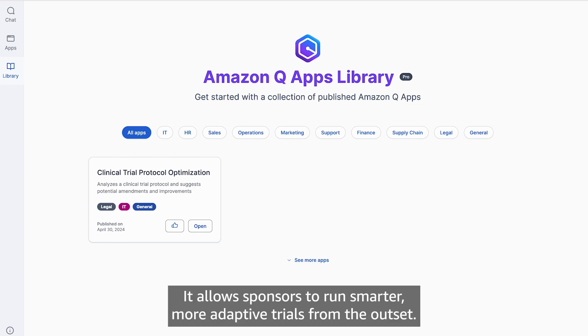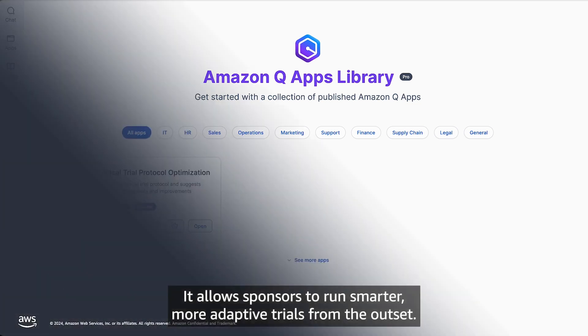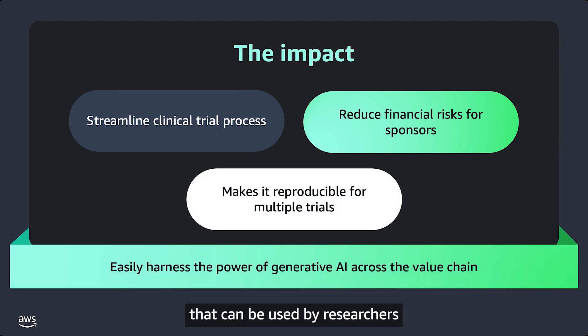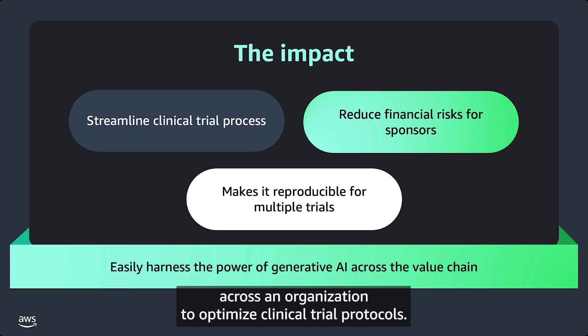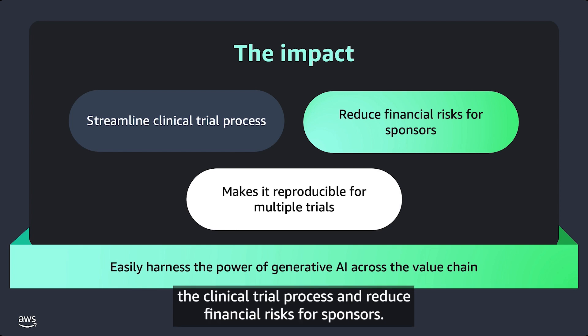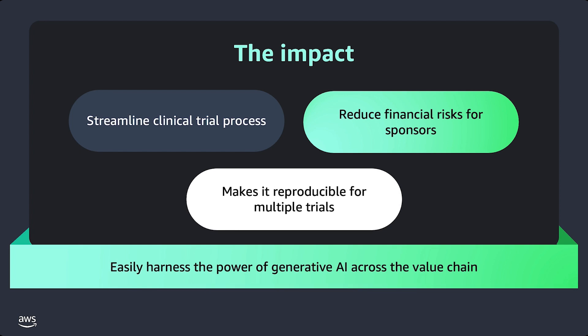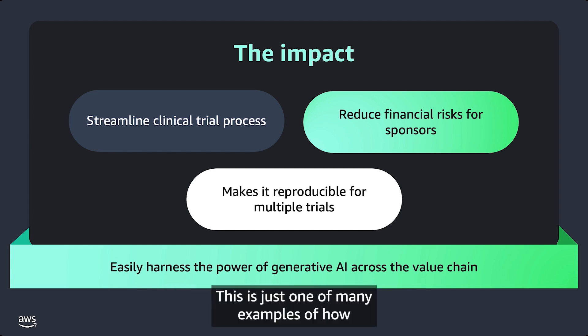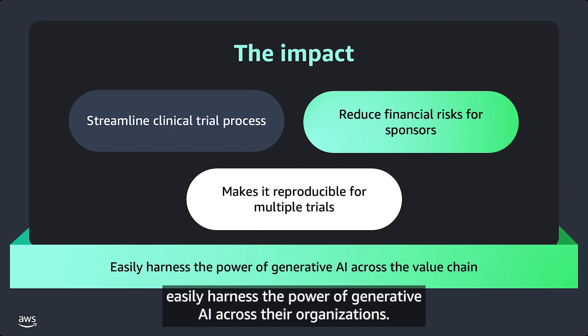Proactively considering these amendments can prevent costly redesigns of the trial midstream and accelerate the overall research timeline. It allows sponsors to run smarter, more adaptive trials from the outset. In less than three minutes, we've created a reproducible app that can be used by researchers across an organization to optimize clinical trial protocols. The app leverages advanced AI and historical data to streamline the clinical trial process and reduce financial risks for sponsors. Q Apps makes this process reproducible so anyone can run the same workflow on multiple trials with ease. This is just one of many examples of how Amazon Q Business can help life science organizations easily harness the power of generative AI across their organizations.